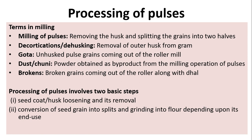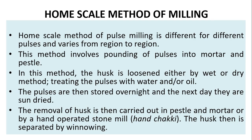Processing of pulses involves two basic steps: first, seed coat husk loosening and its removal; second, conversion of the seed grain into splits and grinding into flour, depending upon its end use.